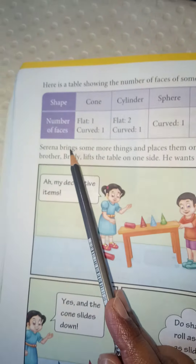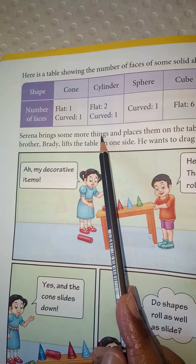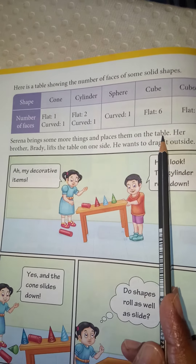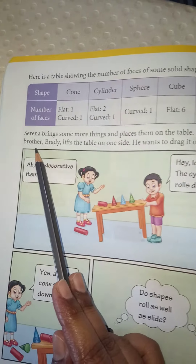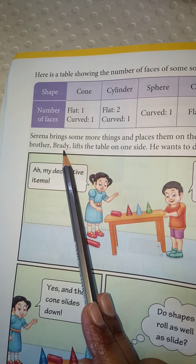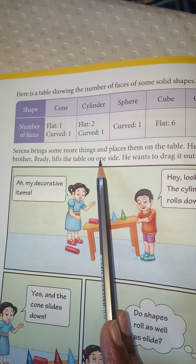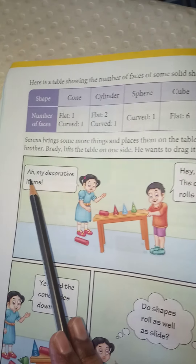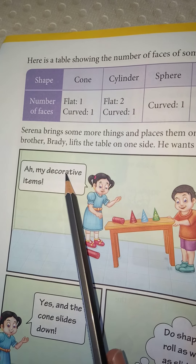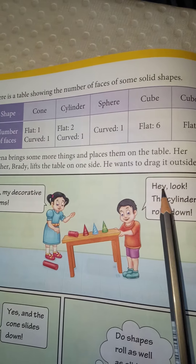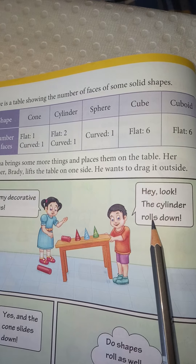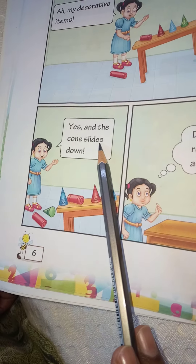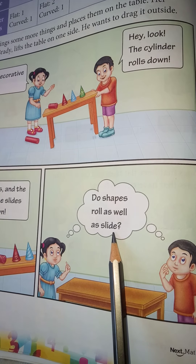Now Serena brings some more things and places them on the table. Her brother Breddy lifts the table on one side — he wants to drag it outside. The cylinder rolls down and the cone slides down. Now, do shapes roll as well as slide?